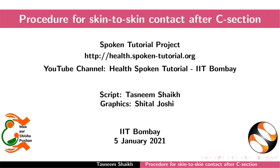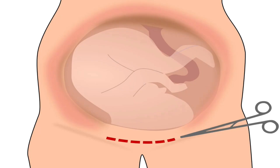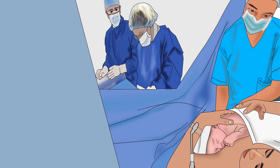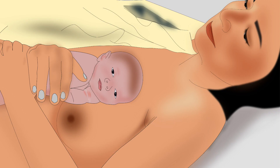Welcome to the spoken tutorial on the procedure for skin-to-skin contact after C-section. In this tutorial, we will learn about how to perform skin-to-skin contact after C-section delivery, and guidelines for monitoring the baby during skin-to-skin contact. The operating room will be called OR, and skin-to-skin contact will be called STS.